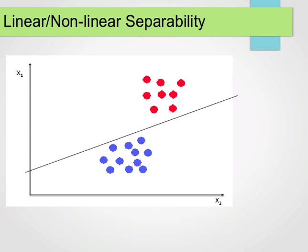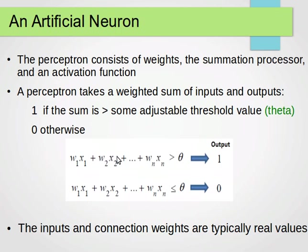Let's move on to a bit more detail of how it works. So the perceptron consists of weights, summation processor, and an activation function. The activation function is the one that does the thresholding.